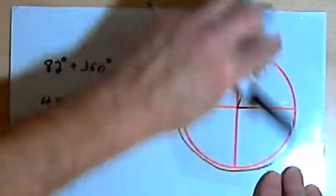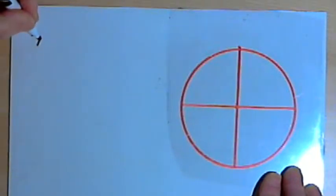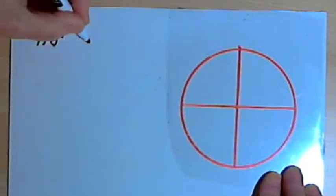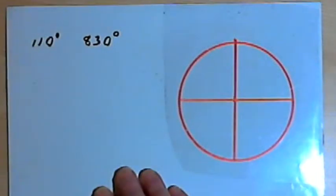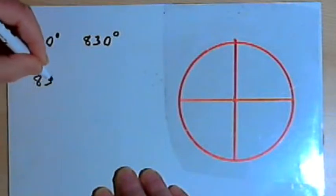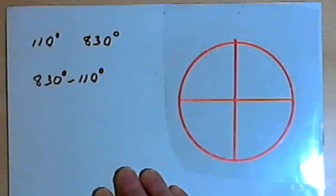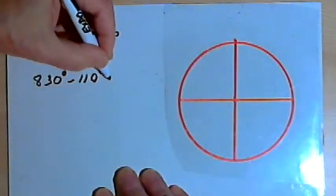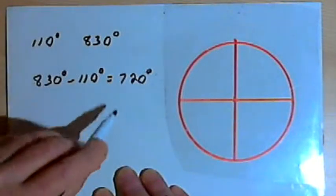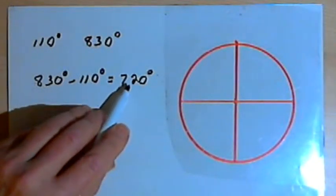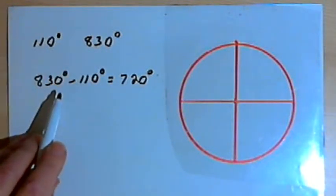So let's say we're given 110 degrees and 830 degrees as the two angles we have. We want to know if they're coterminal. I'll take the bigger one, 830 degrees, and subtract the smaller one, that's 110 degrees, and I end up with 720 degrees. 720 degrees is 2 times 360 degrees. It's a multiple of 360. So these two angles that I had are coterminal.